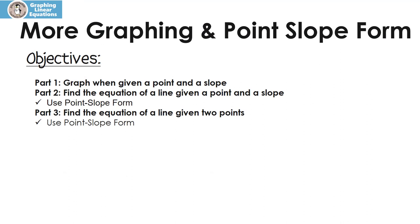What exactly are we going to do today? We're going to graph when given a point and a slope. Then we're going to find the equation of a line given a point and a slope — that's using the point-slope form. Finally, we're going to find the equation of a line given two points, also using the point-slope form. So let's get started.